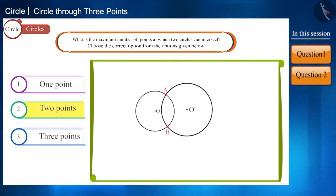Therefore, the second option is correct. The maximum number of points at which two circles can intersect is two. You can confirm this by taking more circles.